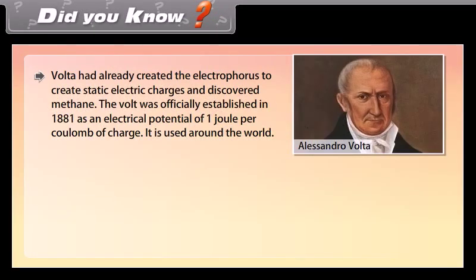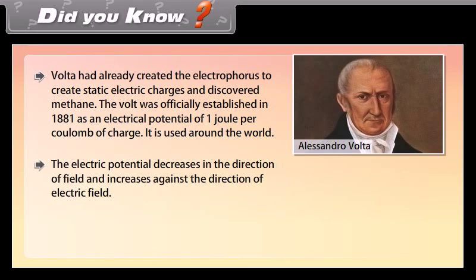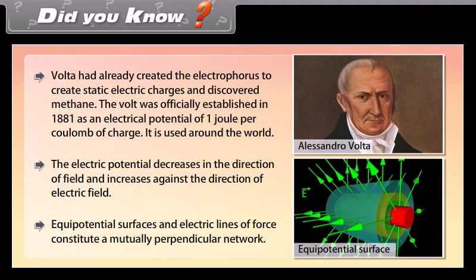Did you know? Volta had already created the electrophorus to generate static electric charges and discovered methane. The volt was officially established in 1881 as an electrical potential of 1 joule per coulomb of charge, and it is used around the world. The electric potential decreases in the direction of the field and increases against the direction of the electric field. Equipotential surfaces and electric lines of force constitute a mutually perpendicular network.